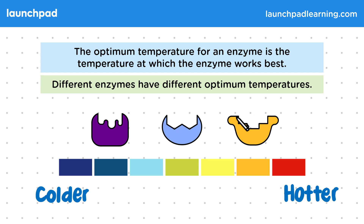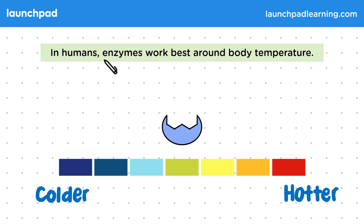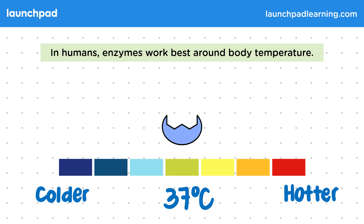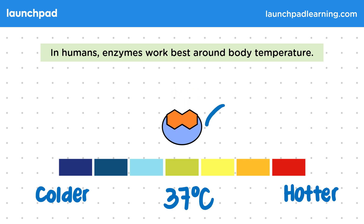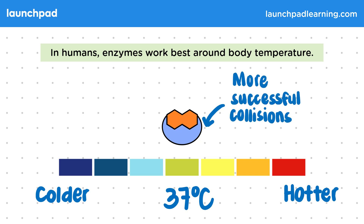So what's the optimum temperature for enzymes in humans? In humans, enzymes work best around body temperature. Normal body temperature for humans is about 37 degrees Celsius. This is the temperature where the largest number of successful collisions take place between the enzyme's active site and the substrate molecules.